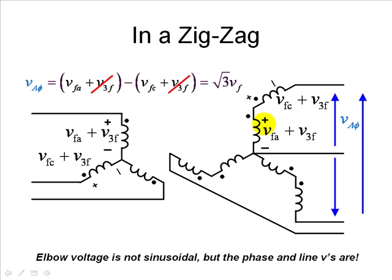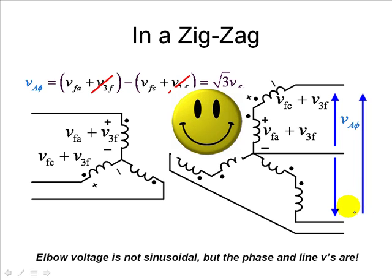This is a very peculiar connection. Voltages in every one of the coils are not sinusoidal, but the visible voltages — both line voltages on the primary side and phase and line voltages on the secondary — are all sinusoidal. Because of this, the customer sees clean sinusoidal voltages, and there are no triple frequency currents flowing in the primary either. The zigzag connection also has other advantages not covered here, particularly its robustness in handling unbalanced three-phase loads. Thank you very much.